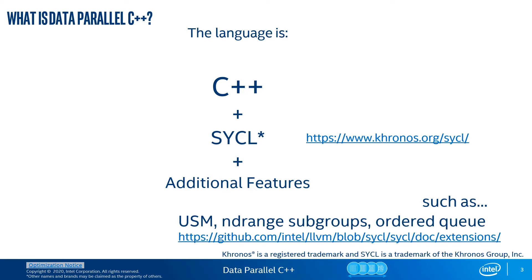For instance, the DPC++ language includes an implementation of unified shared memory to ease memory usage between the host and accelerators. These features are being driven into a future version of the SYCL language. You can take a look through a full list of additional features on the Intel GitHub project with a detailed description. Note that all of SYCL is included in DPC++.